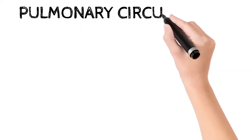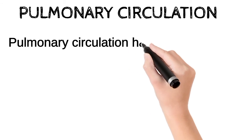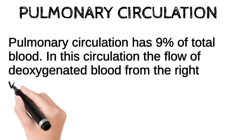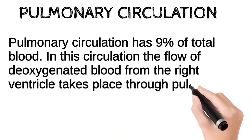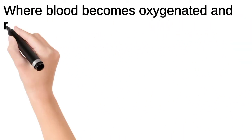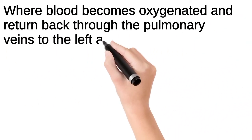Pulmonary circulation. Pulmonary circulation has 9% of total blood. In this circulation the flow of deoxygenated blood from the right ventricle takes place through pulmonary artery towards the lungs, where blood becomes oxygenated and returns back through the pulmonary veins to the left atrium.